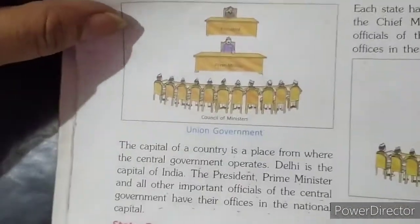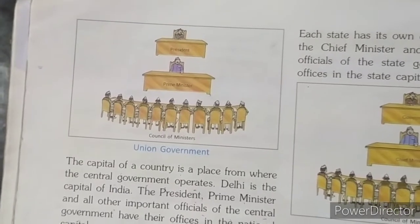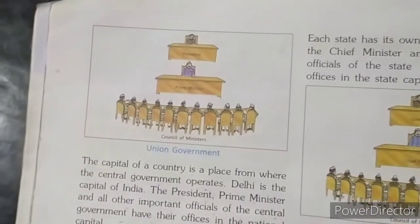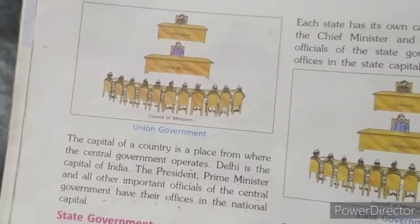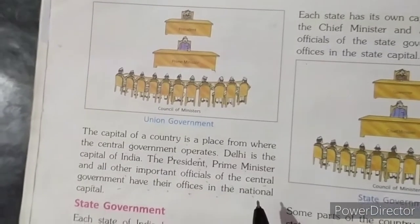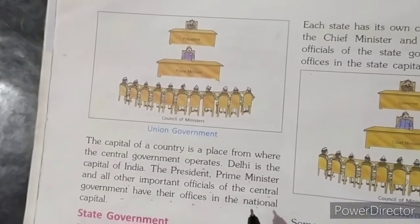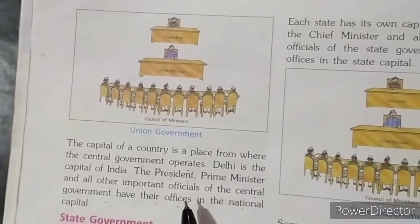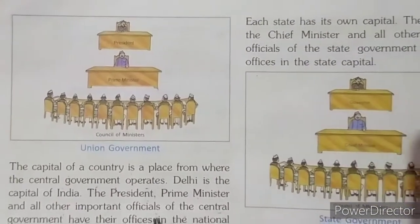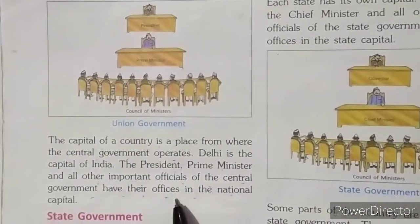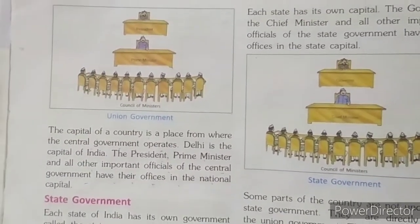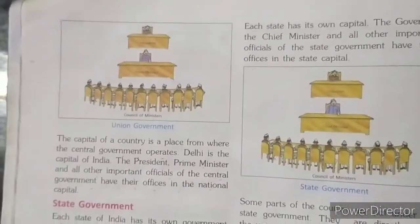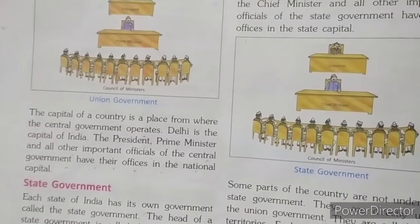The capital of the country is a place from where the central government operates. Delhi is the capital of India. The President, Prime Minister and all other important officials of the Central Government have their offices in the National Capital.